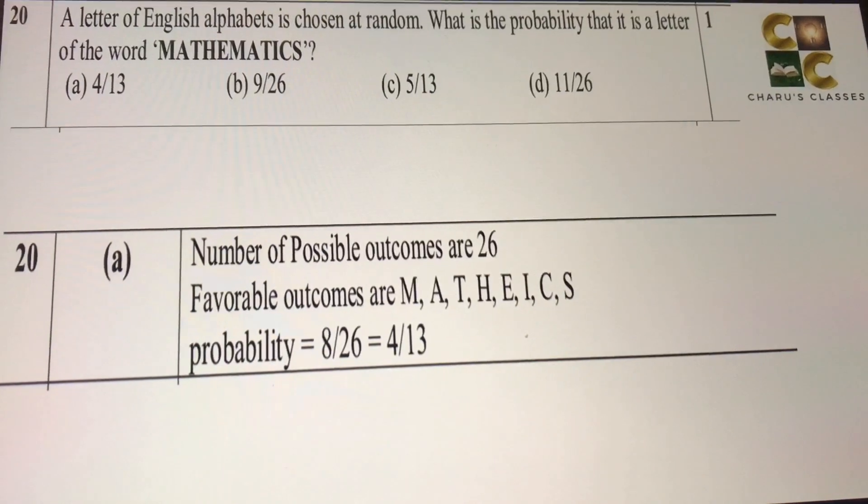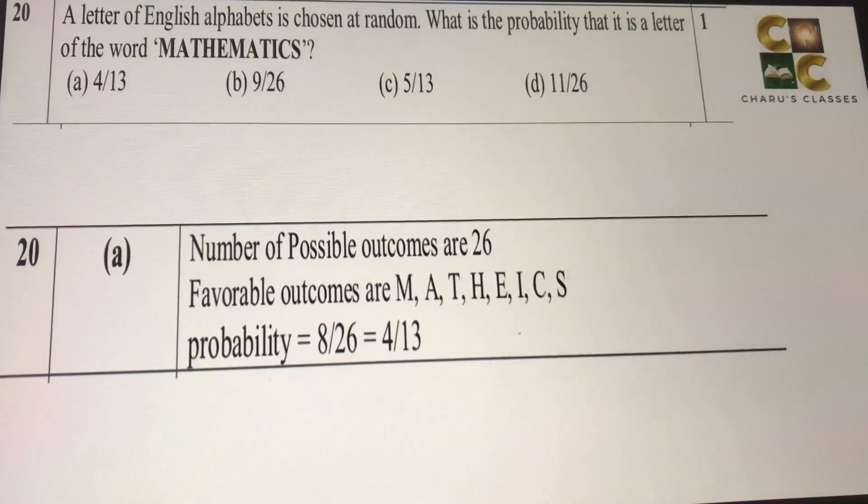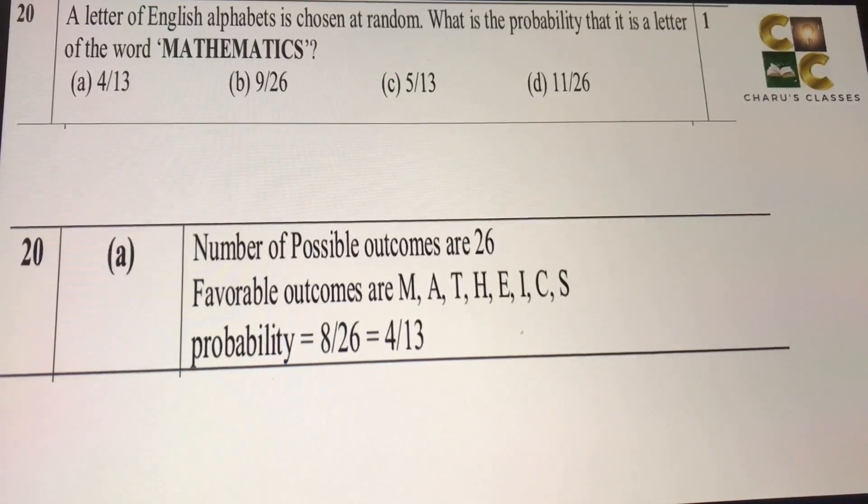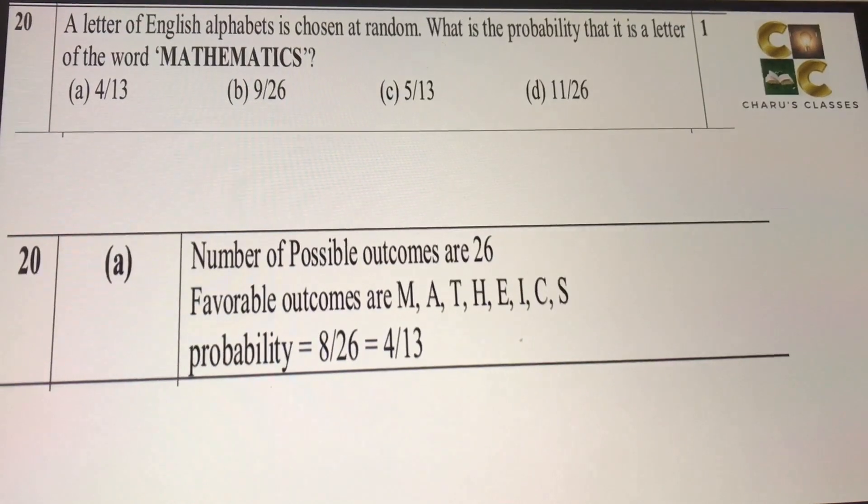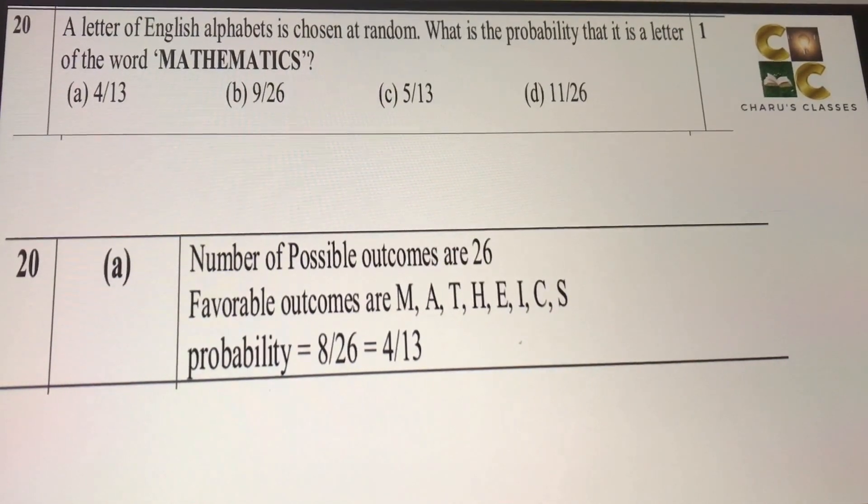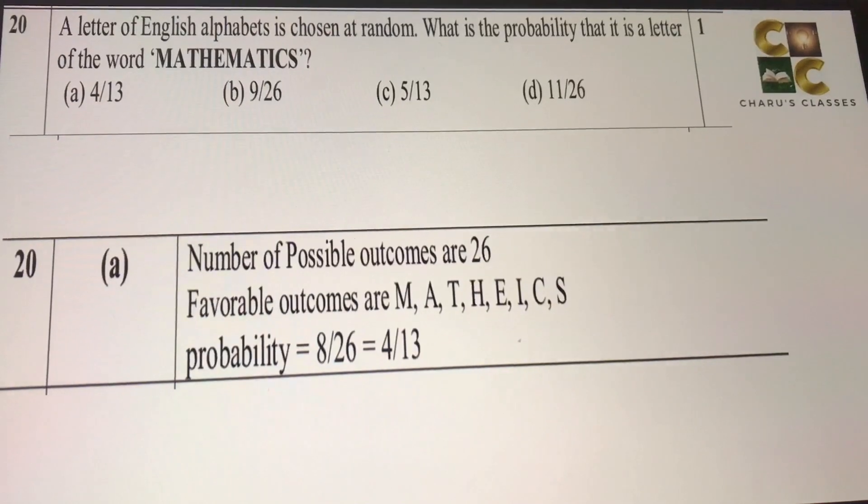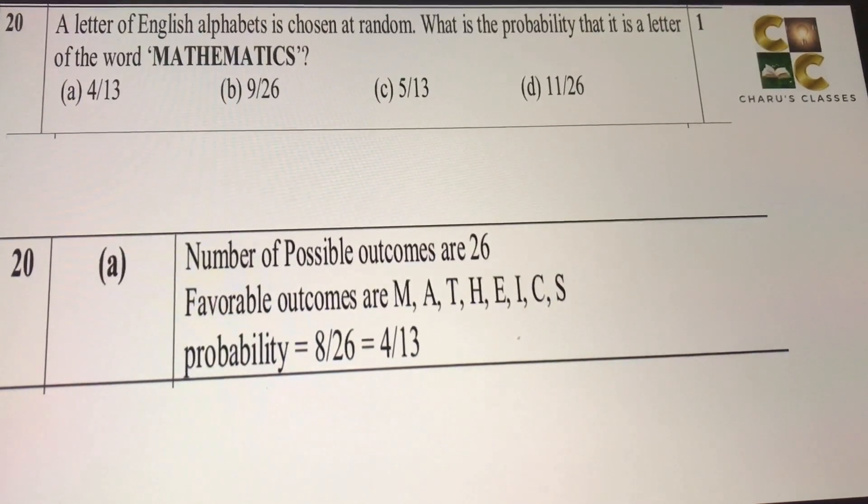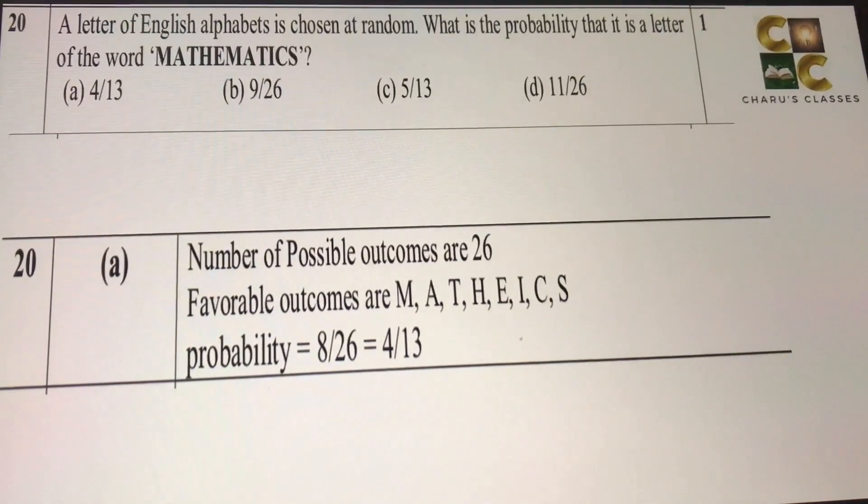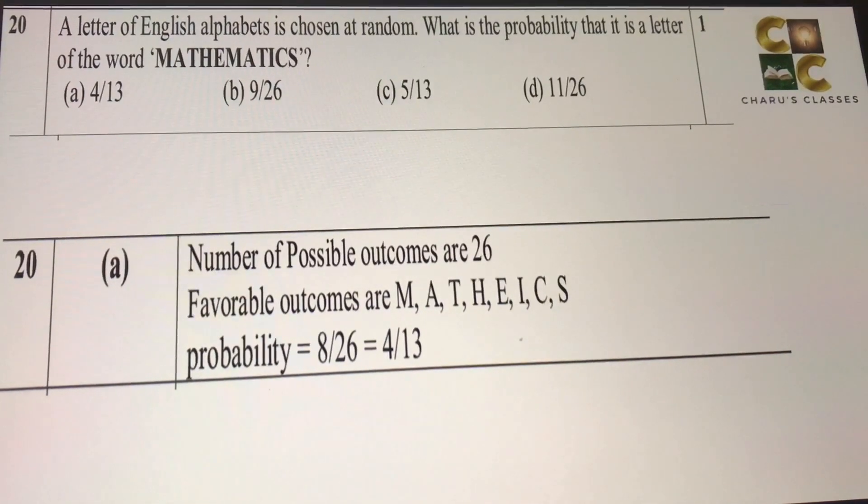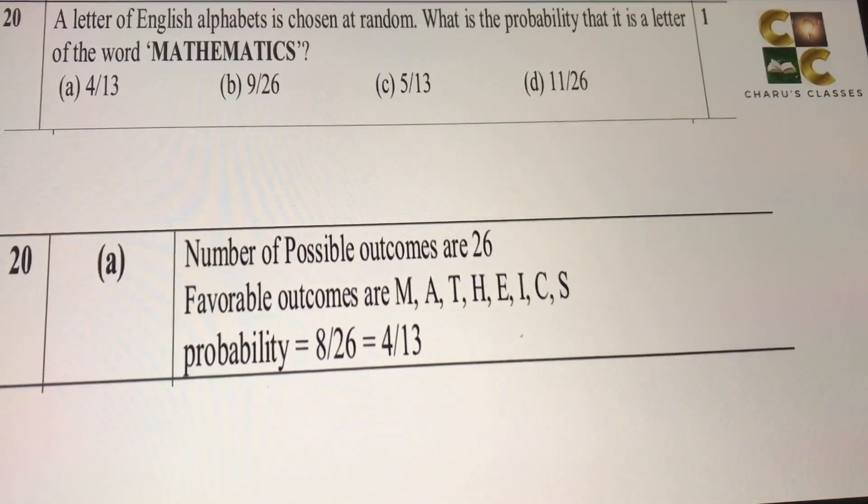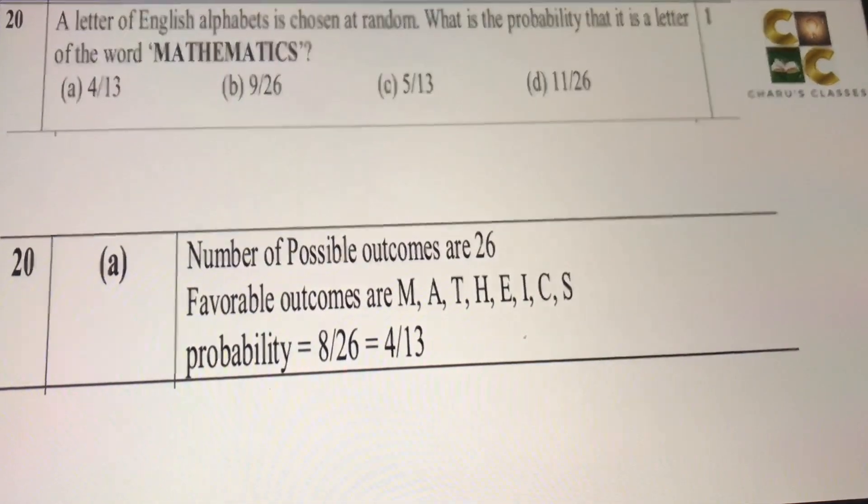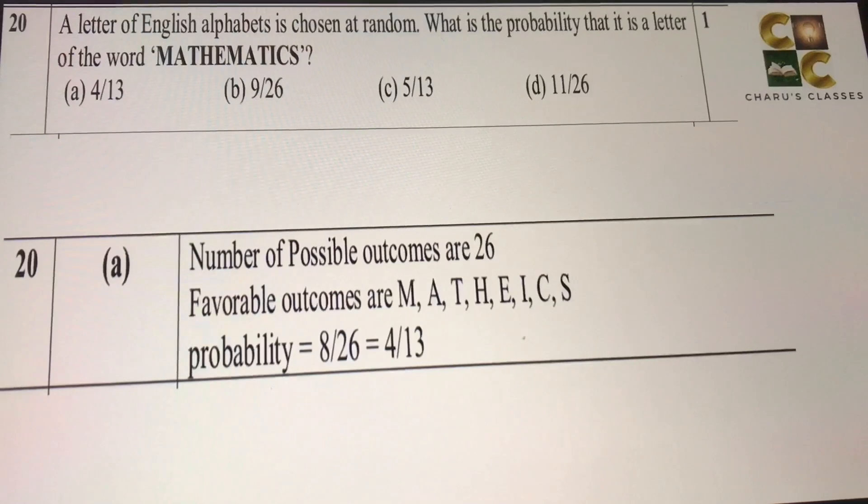Twentieth: a letter of English alphabet is chosen at random. What is the probability that it is a letter of the word mathematics? So in English alphabets, we have 26 alphabets. And mathematics letters, if we write and we count, we do not have to repeat. There are 8 letters in the word mathematics. This is without repetition. We are not going to count one alphabet again and again.